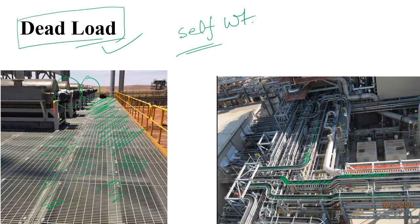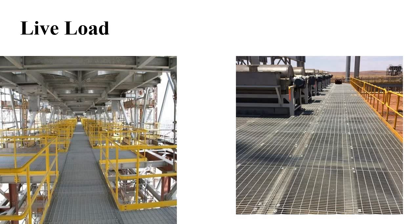After self weight and dead load, we consider live load. When platforms are provided and operators work on them, there will be human forces and operational loading. Based on codal provisions, a maximum of 4 kN per meter square is typically sufficient for live load on pipe rack platforms.